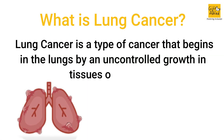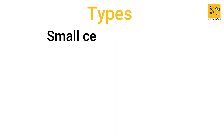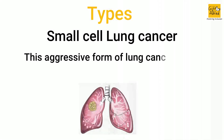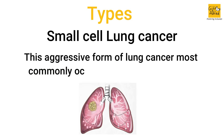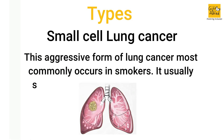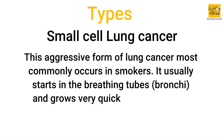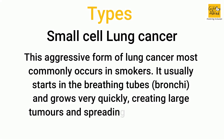Types. Small cell lung cancer: this aggressive form of lung cancer most commonly occurs in smokers. It usually starts in the breathing tubes or bronchi and grows very quickly, creating large tumors and spreading throughout the body.